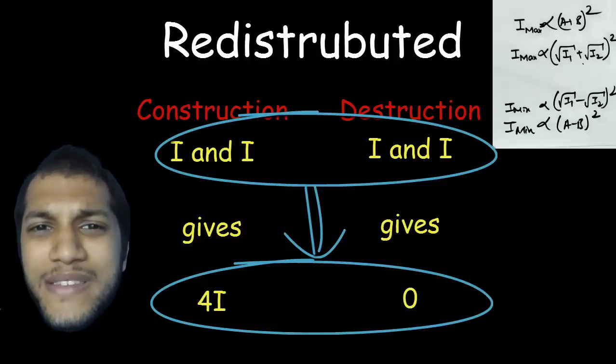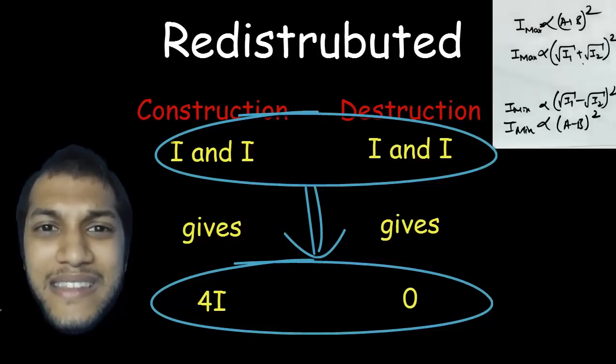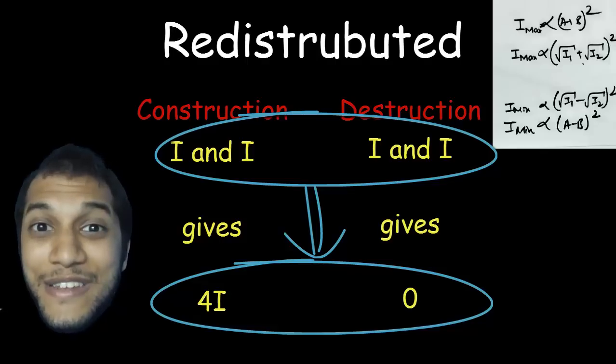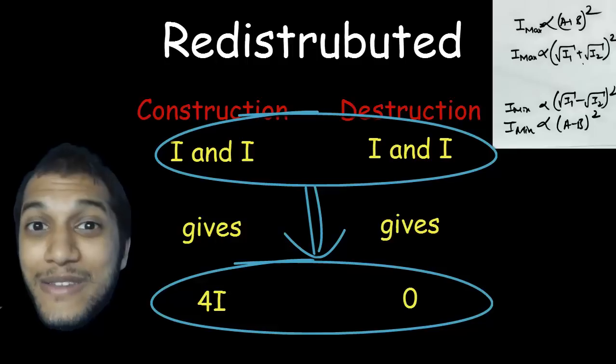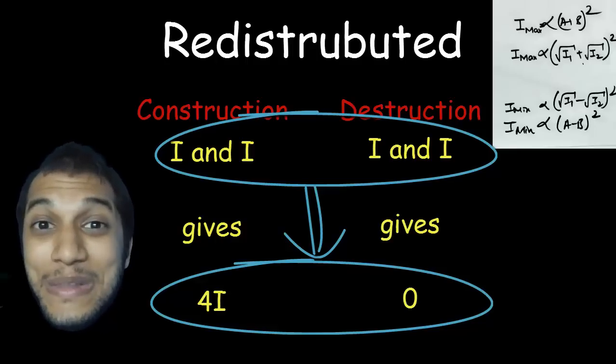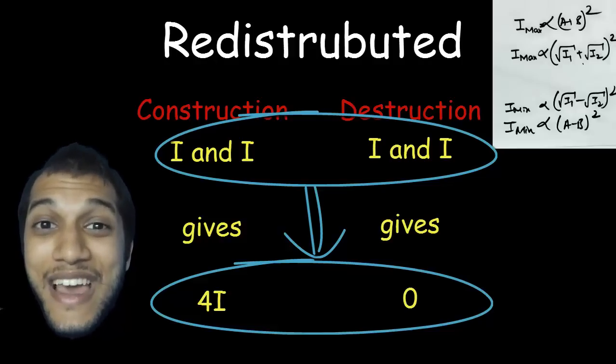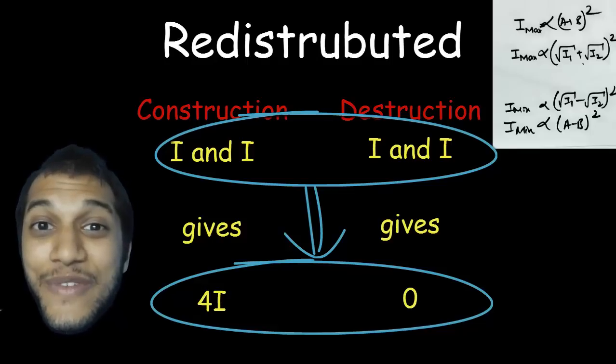instead of just giving twice the brightness everywhere, let's interfere in a nice, interesting way, where at some points we'll have zero brightness and at some other points, instead of having twice the brightness, we'll have four times the brightness. So that is a very, very artistic and interesting way in which nature interferes when we have two coherent sources.